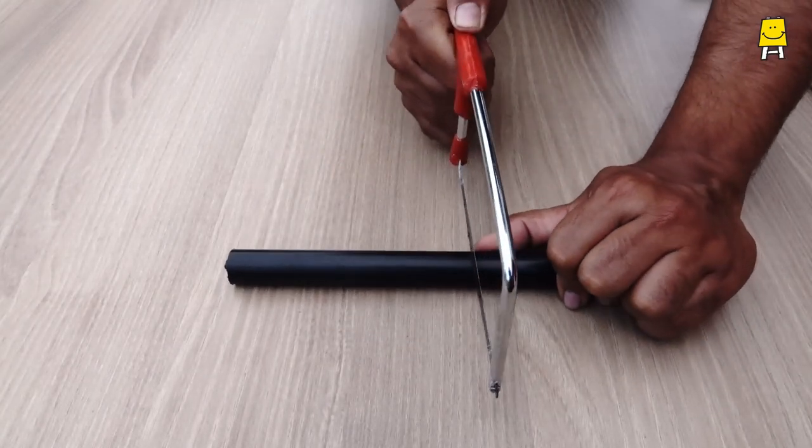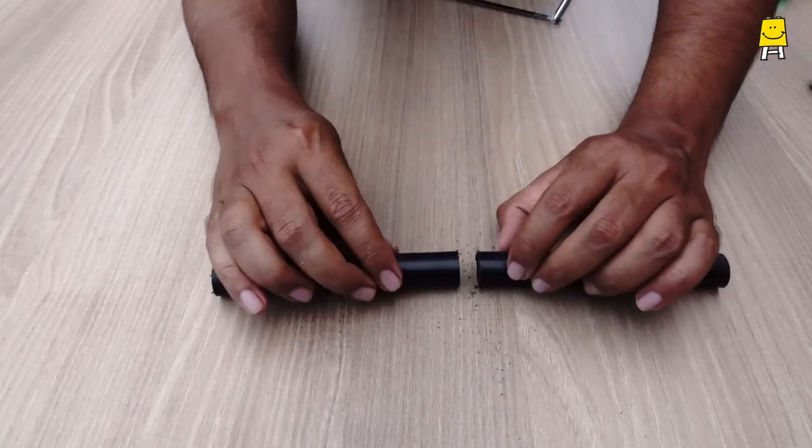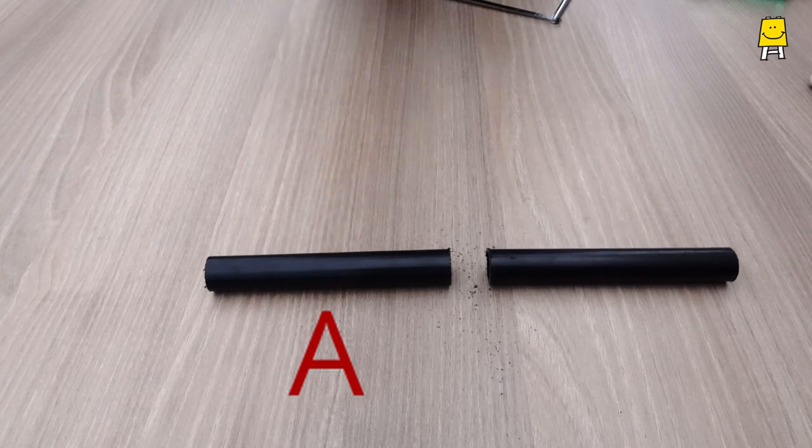Cut the plastic or PVC pipe into two halves. Let's call them A and B.